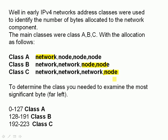To determine what class you were dealing with, you'd look at the IP address and examine the leftmost byte. If it had a range of 0 to 127, it was a class A; 128 to 191, a class B; and 192 to 223, it was a class C. So if it was a class C address, then you knew it had three bytes for the network and one byte for the node.